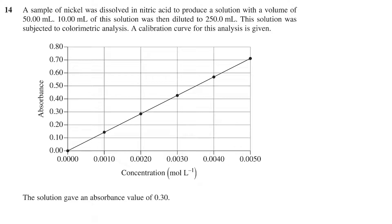This is followed by the calibration curve showing the relationship between absorbance and concentration. Then we have the statement: the solution gave an absorbance value of 0.30. The question asks what was the mass of the sample of nickel, followed by four options between 0.0021 and 0.15 grams.